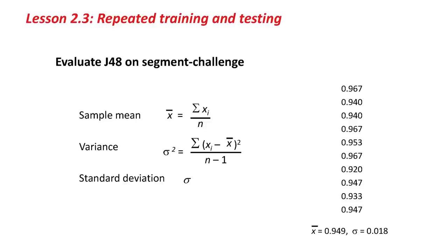We can calculate the sample variance: we take the deviation from the mean, subtract the mean from each of these numbers, square that, add them up, and divide not by n but by n-1. That might surprise you. The reason for using n-1 is because we've calculated the mean from this sample — when the mean is calculated from the sample, you need to divide by n-1, leading to a slightly larger variance estimate. Taking the square root gives us a standard deviation of 1.8%. So the real performance of J48 on the Segment Challenge dataset is approximately 95% accuracy, plus or minus approximately 2% — anywhere between about 93% and 97%.